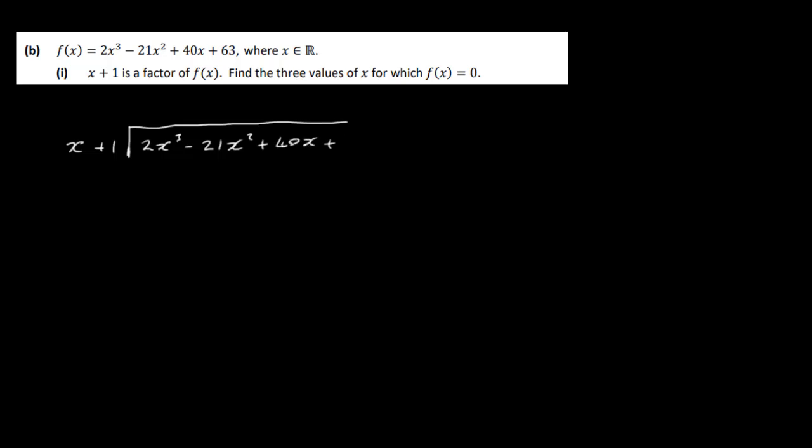Part B, question 1. f of x equals 2x cubed minus 21x squared plus 40x plus 63, x is real. We're told x plus 1 is a factor of f of x and need to find three values of x for which f of x equals 0. There are a couple of ways of doing this — I'll do both. The first way is long division, dividing x plus 1 into our function since we're told it divides in evenly.